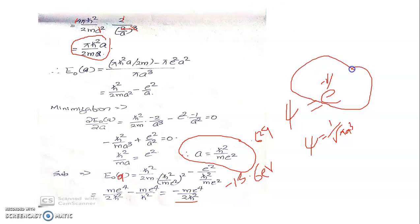The variational method gives an exact evaluation of both the wave function and the ground state energy, provided you select an exponential trial wave function of this form. We will move to the case of the helium atom as the next application of the variational method in the next video.